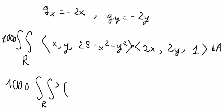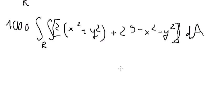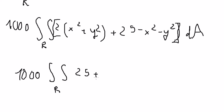This gives us 2x squared plus 2y squared plus 25 minus x squared minus y squared, which simplifies. We end up with the integral of 1000 times (25 plus x squared plus y squared) over the region, with area element dA.